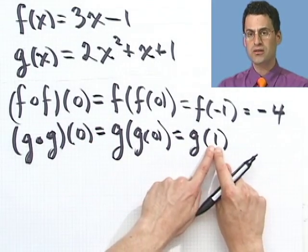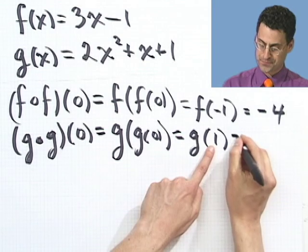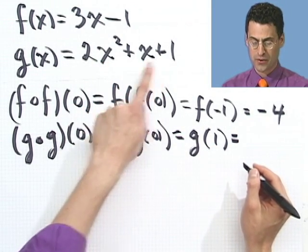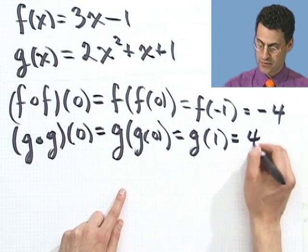So I take the 1 and use it as input back into g. In this case, I would see 2 times 1 squared plus 1 plus 1. So that's 2, 3, 4. So it equals 4.